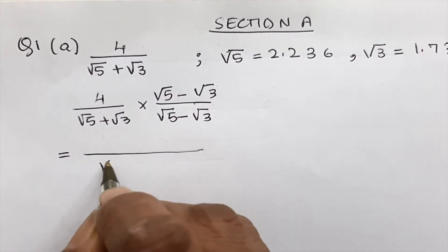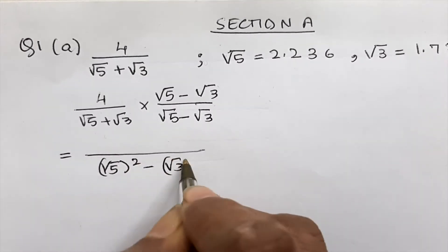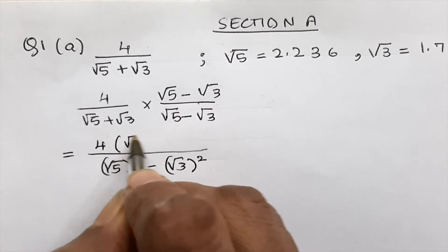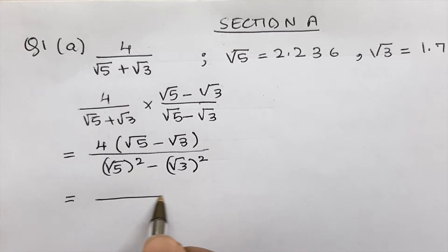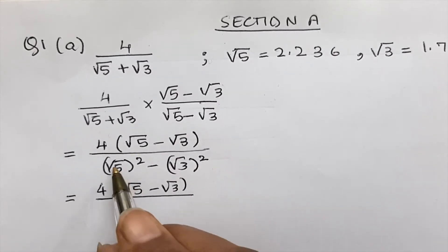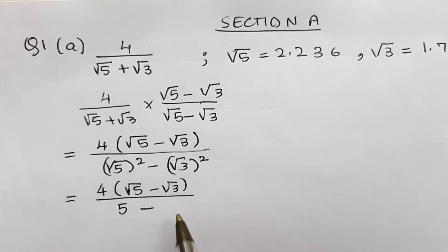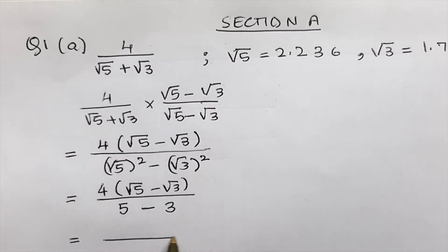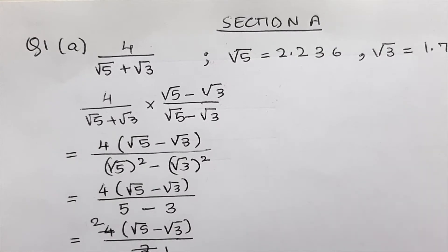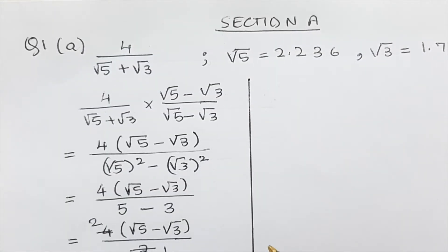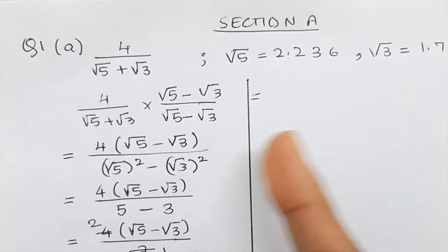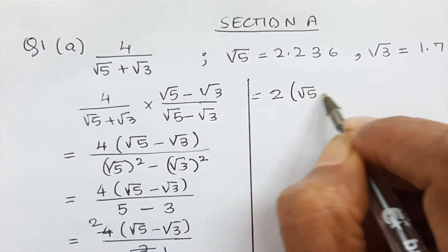In the denominator we get (√5)² − (√3)², using the identity (A + B)(A − B) = A² − B². This simplifies to 4(√5 − √3) upon (5 − 3), which is 4(√5 − √3) upon 2, giving us 2(√5 − √3). In the exam write one step below the other; here I'm using a column to save space.